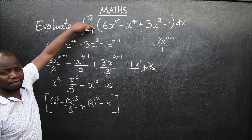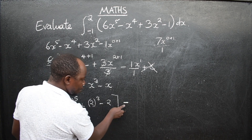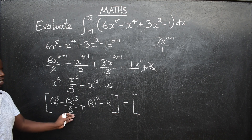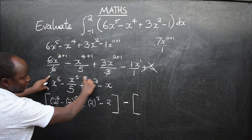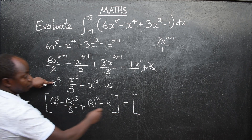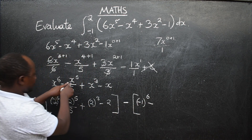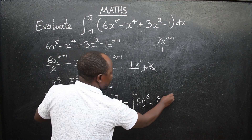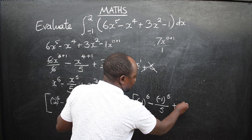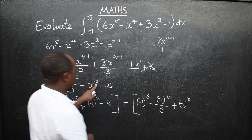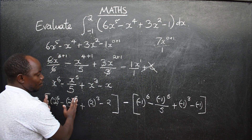Before substituting the lower limit, always put a minus sign, then open another bracket and substitute negative 1: negative 1 to the power 6, minus negative 1 to the power 5 over 5, plus negative 1 to the power 3, minus negative 1.